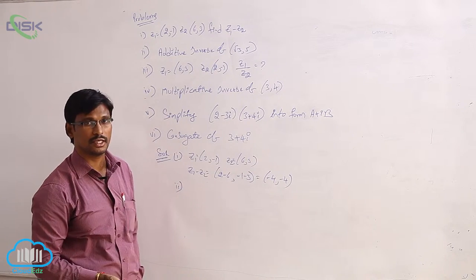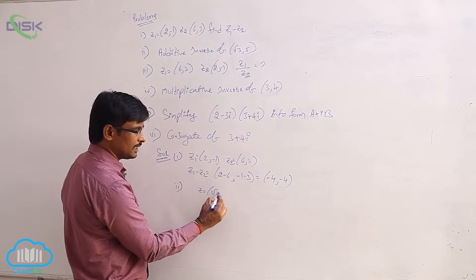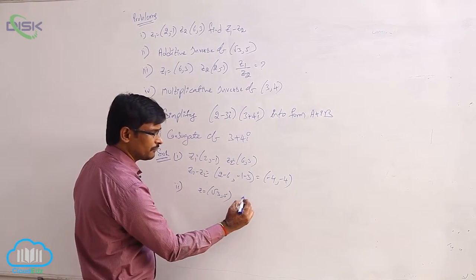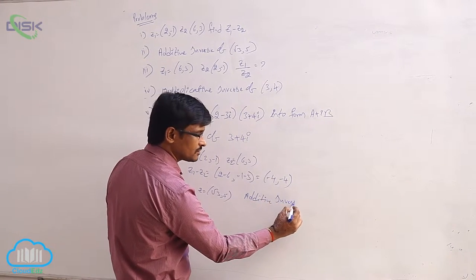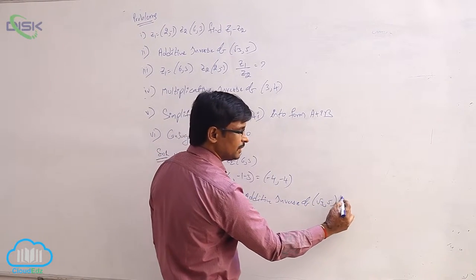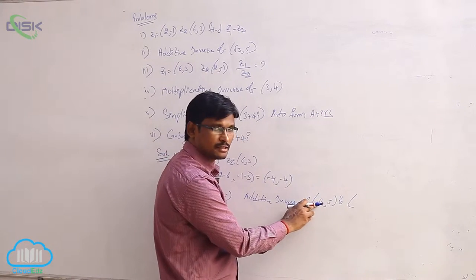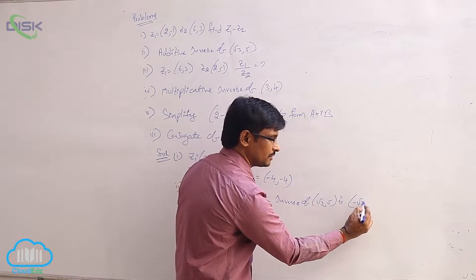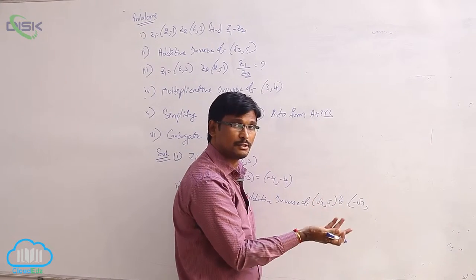The second problem: they are asking for the additive inverse of (√3, 5). Let z = (√3, 5). To find the additive inverse, simply take the opposite signs. The opposite sign of +√3 is −√3, and the opposite sign of +5 is −5.